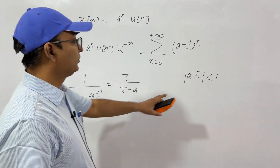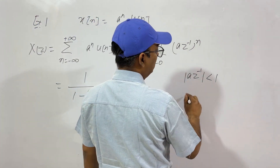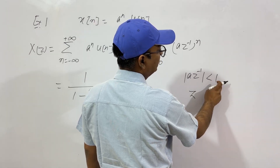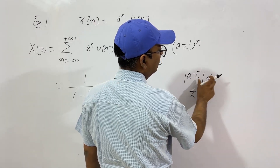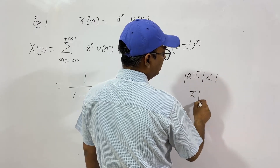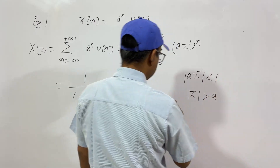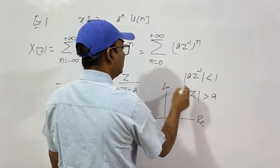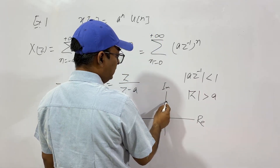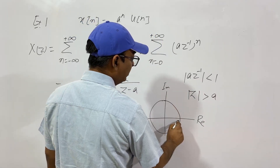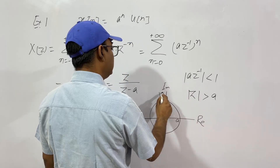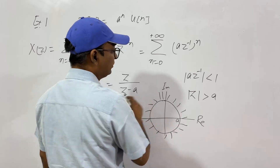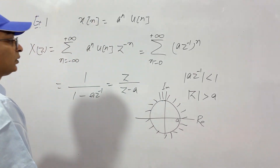The region of convergence is |Z| > |a|, meaning it is the region outside the circle of radius a in the Z-plane. This is our result for the first example.